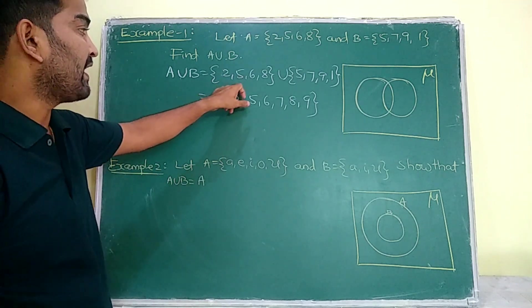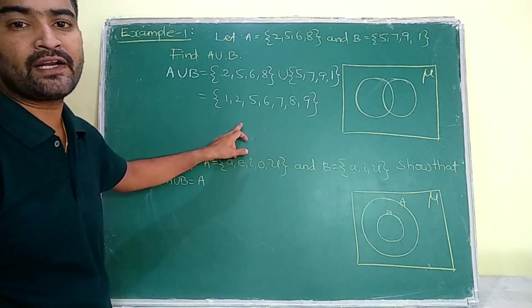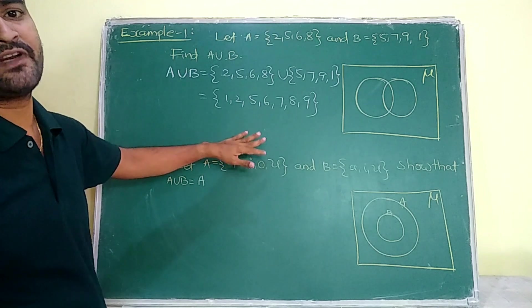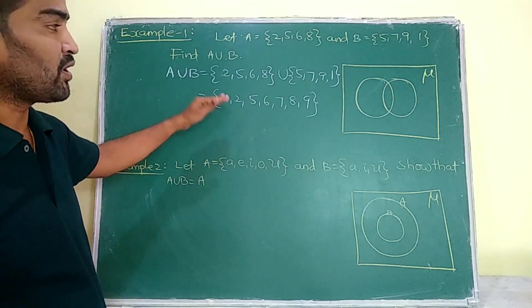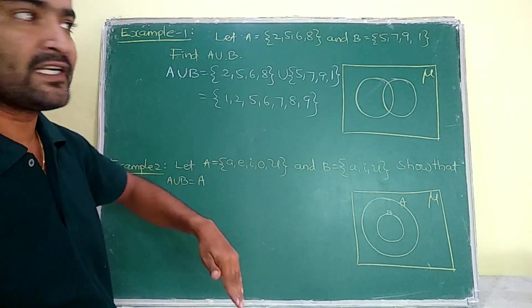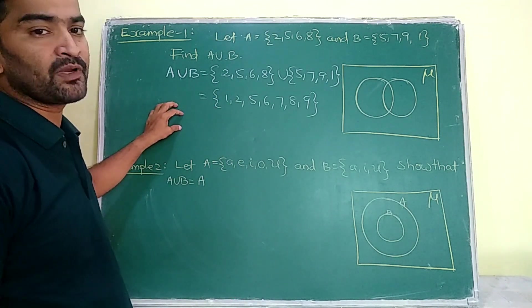Here the 5 is repeated twice, but we have to write it only once in the set. As the property of a set, no element is repeated. This is A union B.